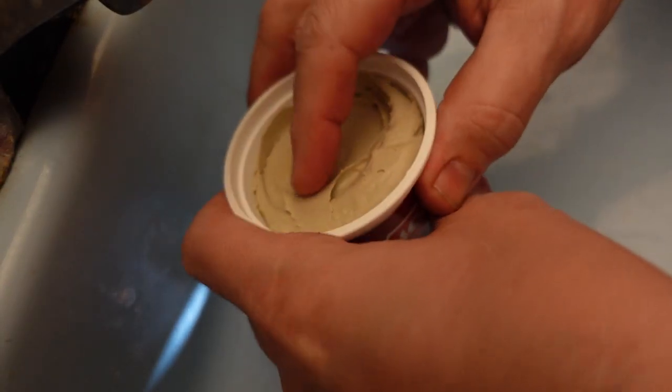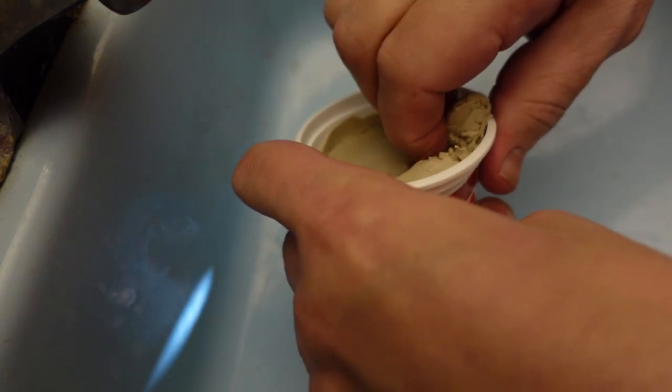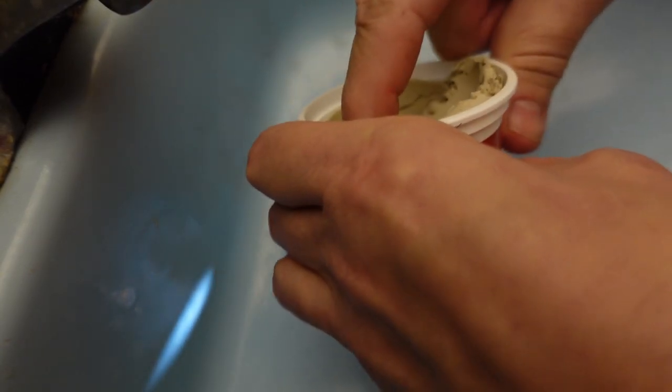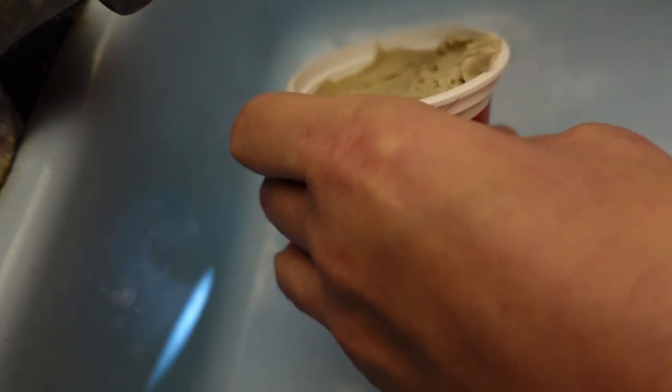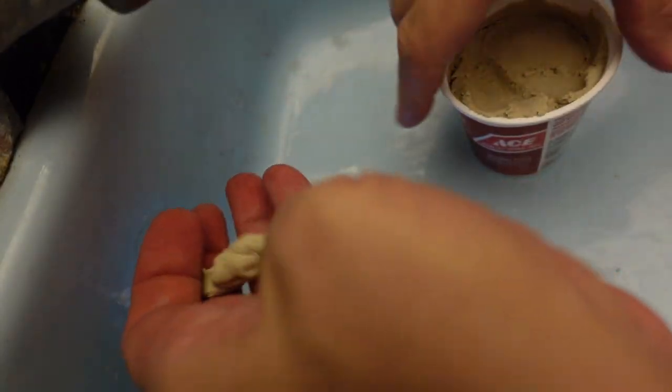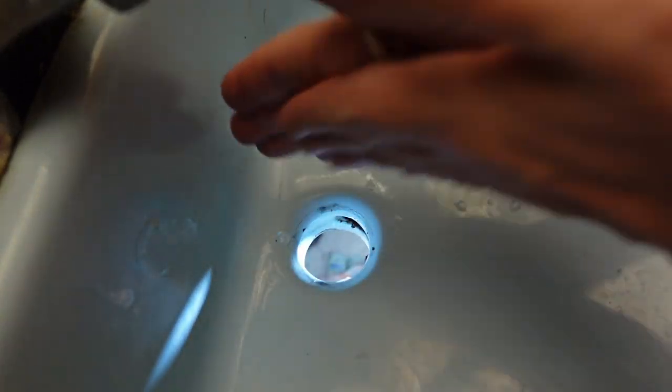So I'm having to redo all of this. Found some plumber's putty at the hardware store. This is the kind of thing that you really should be using when you're replacing the tailstock on a pipe or on a sink. It's got kind of the consistency of modeling clay or play-doh. It's actually kind of nice to work with.